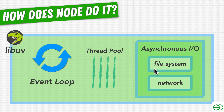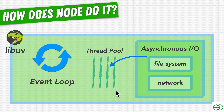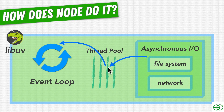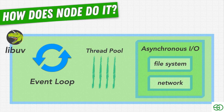For file system operations, which use the thread pool, libuv would send the work to one of the threads, where it would run through what it needs to do independently of all the other threads in our application, including the main thread running our JavaScript code. This happens in the background, and when the operation completes, the event loop gets notified of the results, executing the corresponding callback and making sure our application is running smoothly.